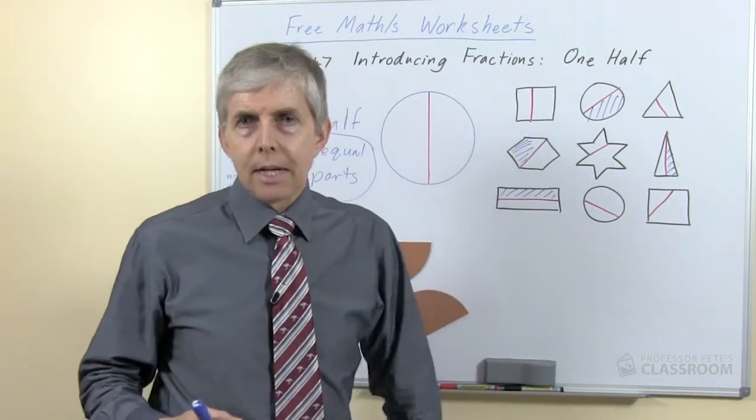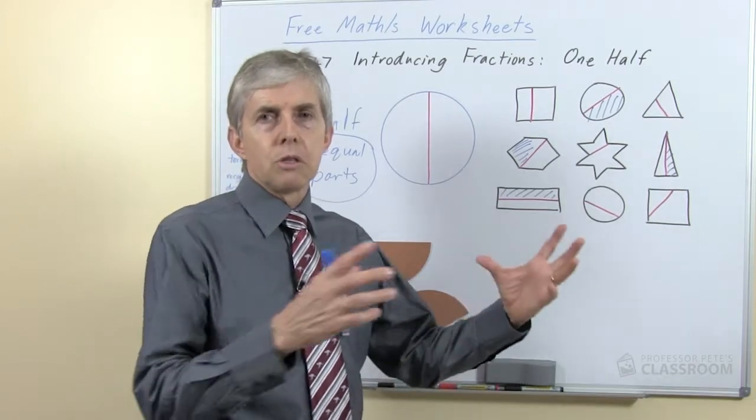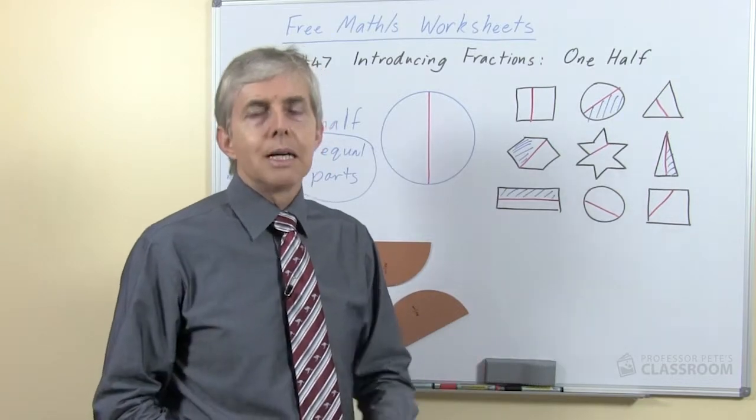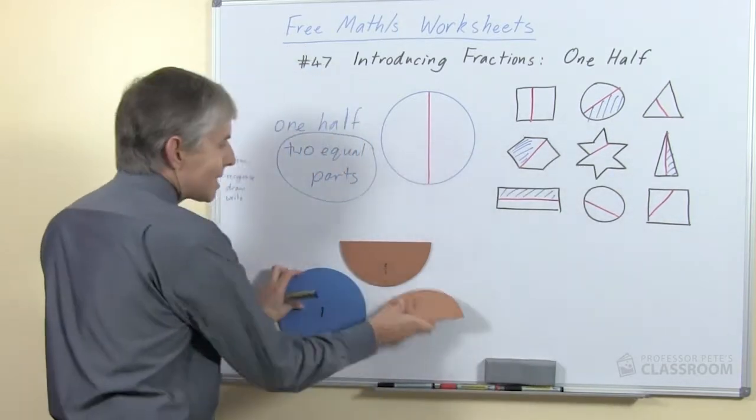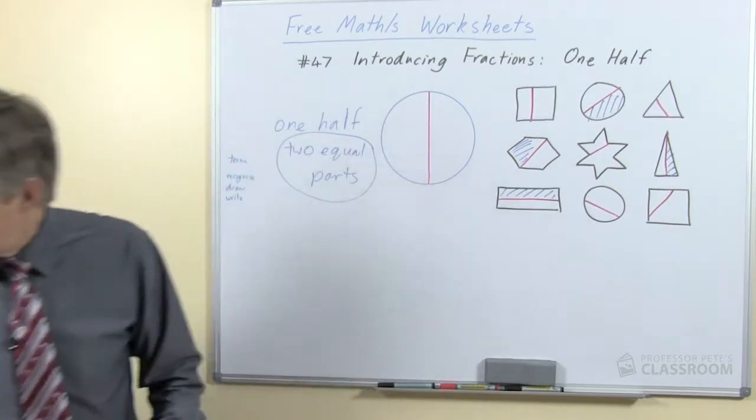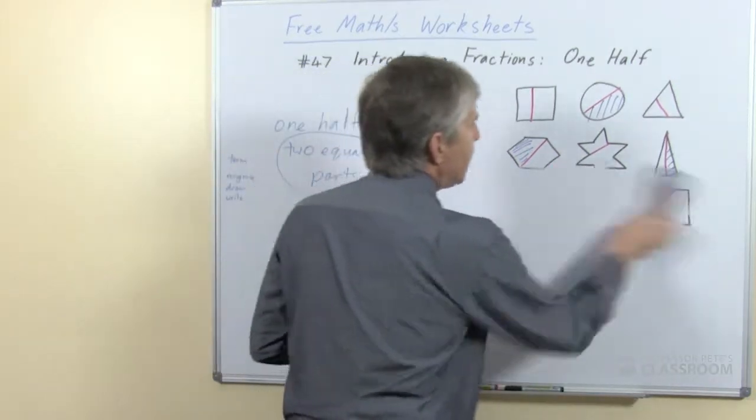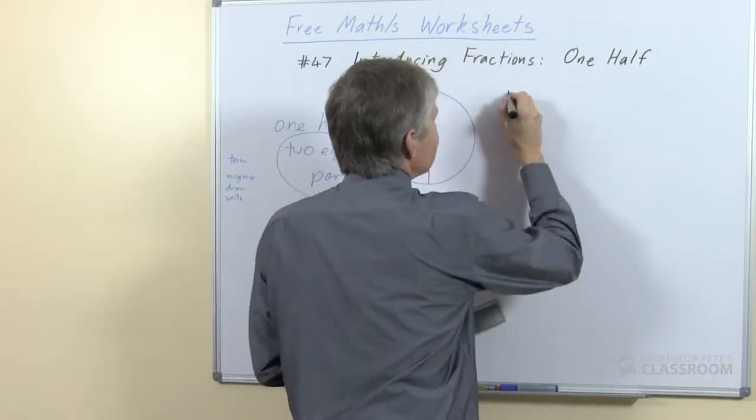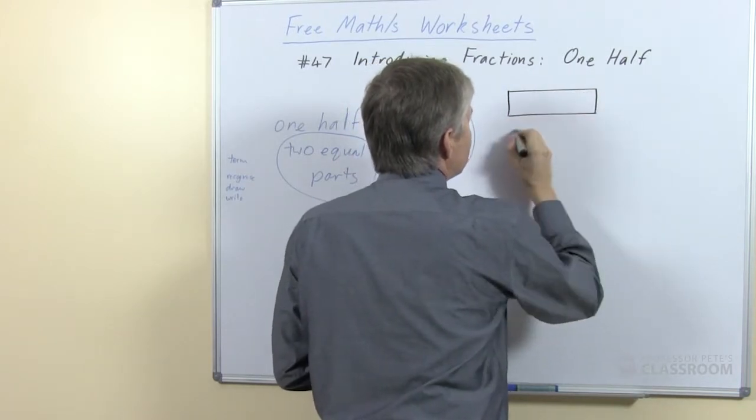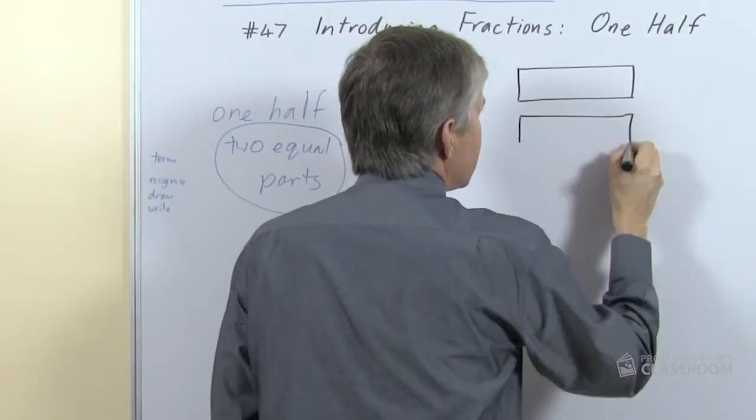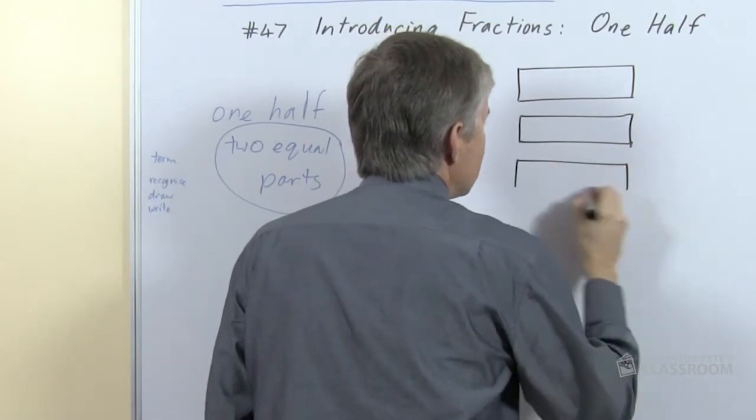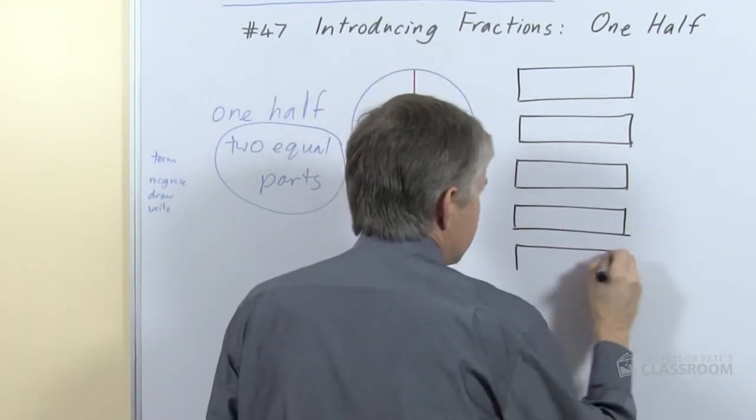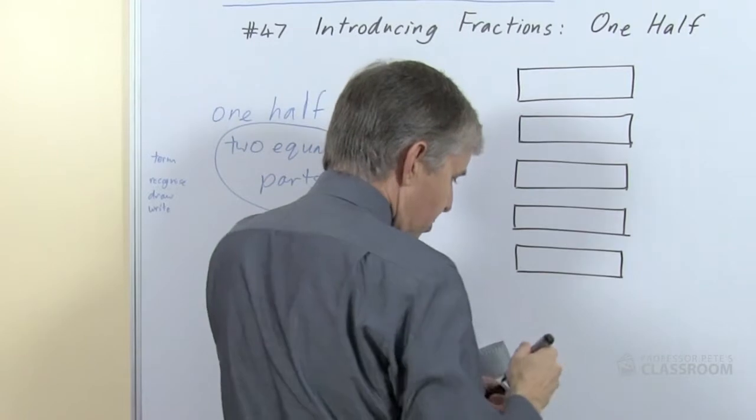That's one type of exercise. Another one is to ask the students to draw the halves themselves. Initially, provide them with the shapes and ask them to draw a line dividing it in half. But we can extend that activity further. We're going to draw a number of rectangles here that are basically congruent or the same size and proportions.